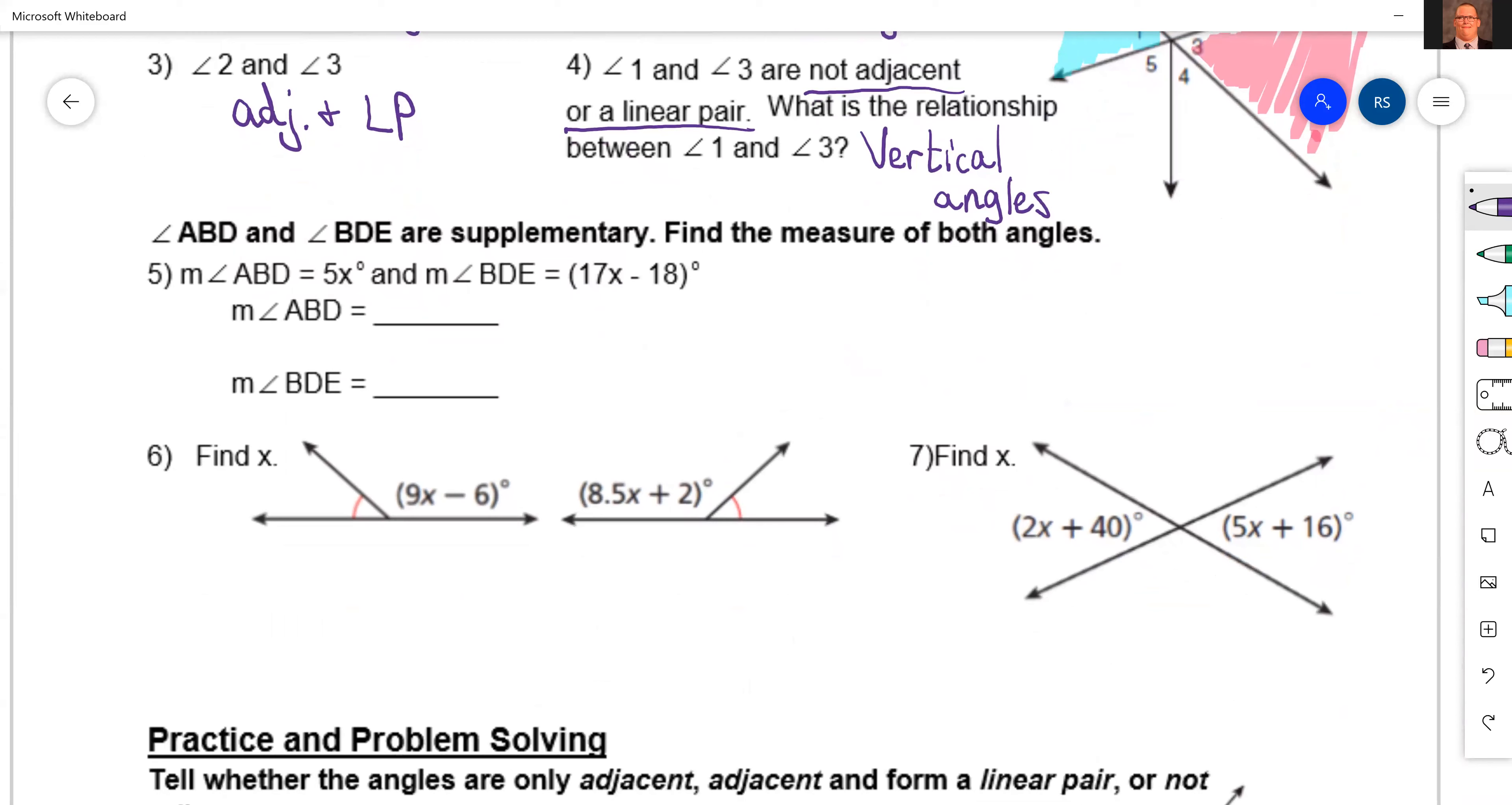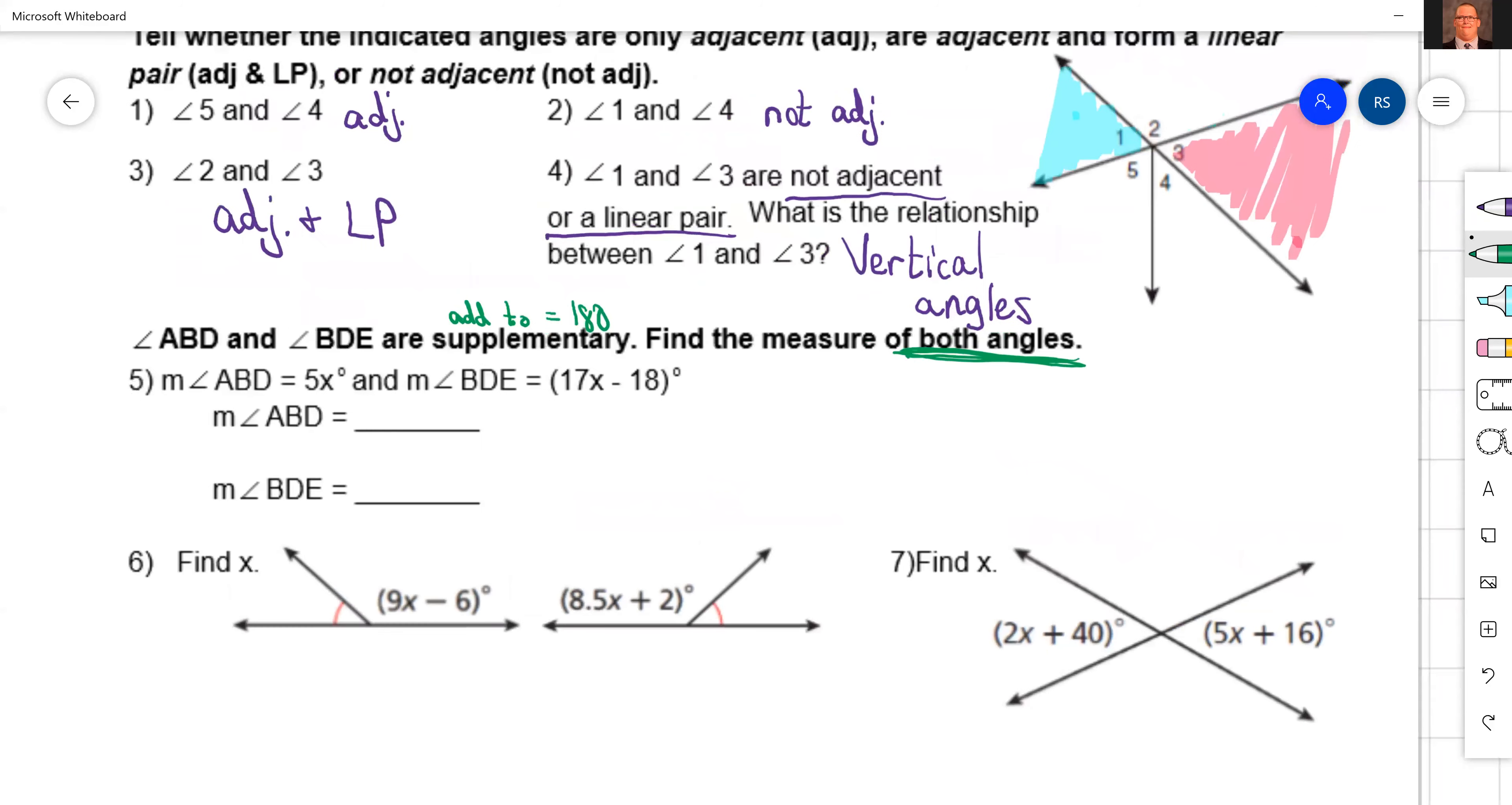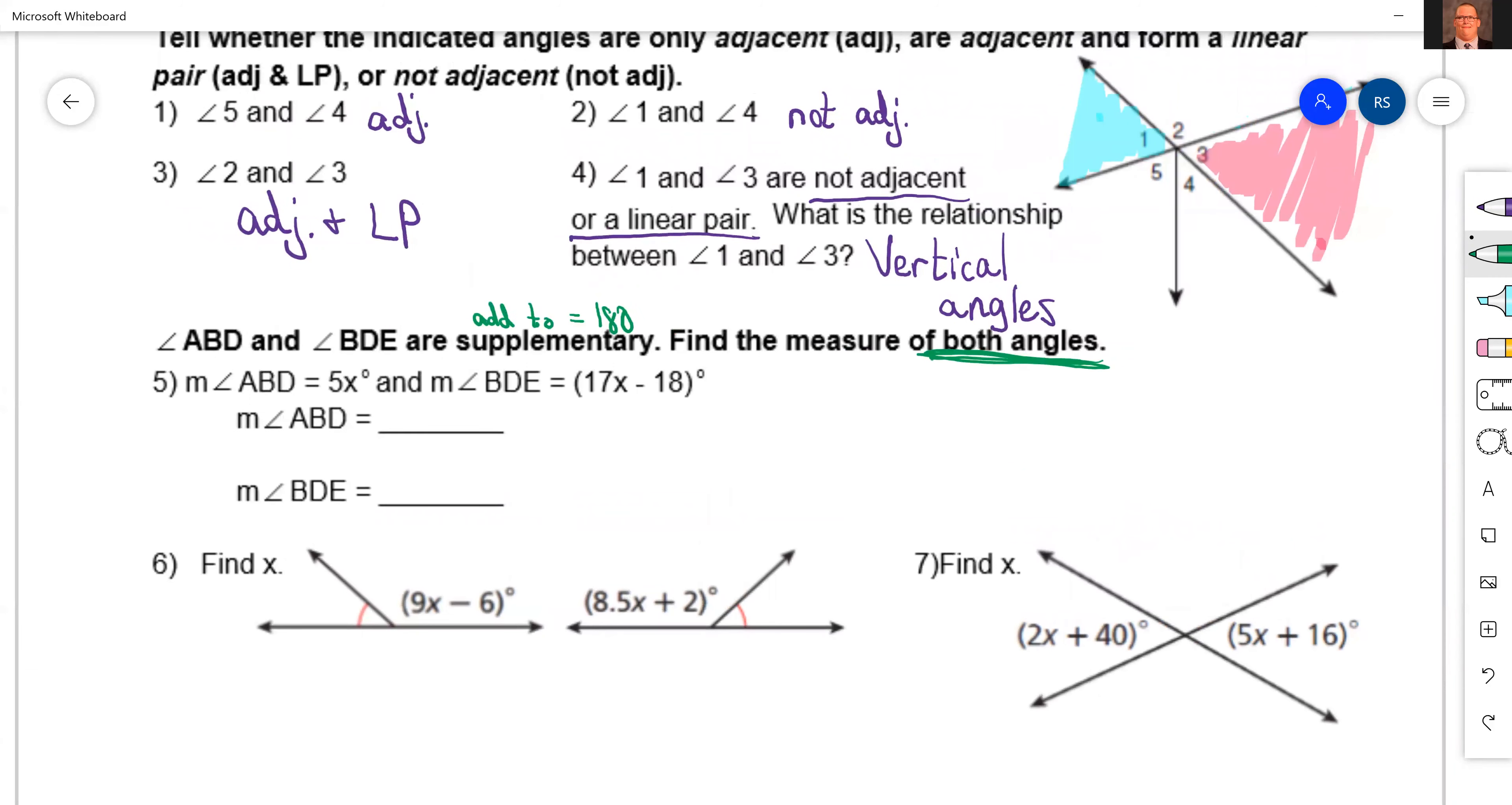Let's look at the next one. These are going to be like ones we've done on our notes, so if you're reading it and you're like I don't know, look at your notes. Angles ABD and angle BDE are supplementary. Stop there, what's supplementary mean? They add to equal 180. Find the measure of both angles, not just x, we gotta find both angles.